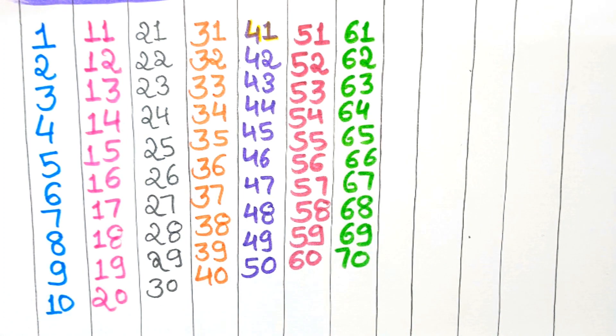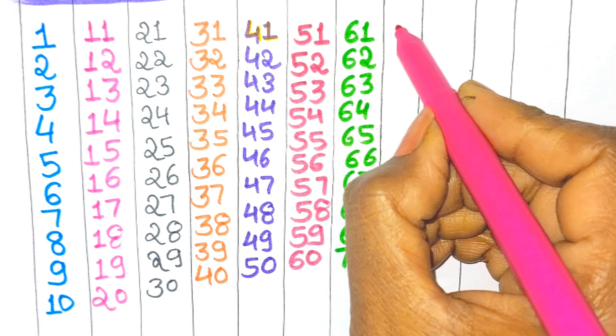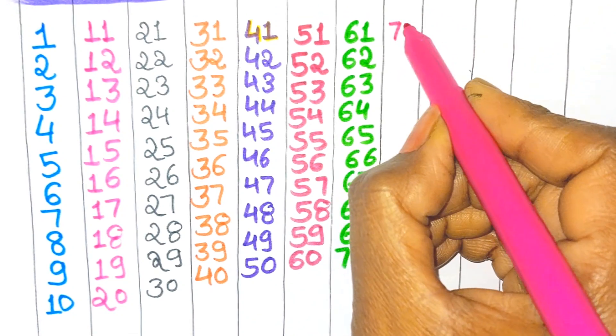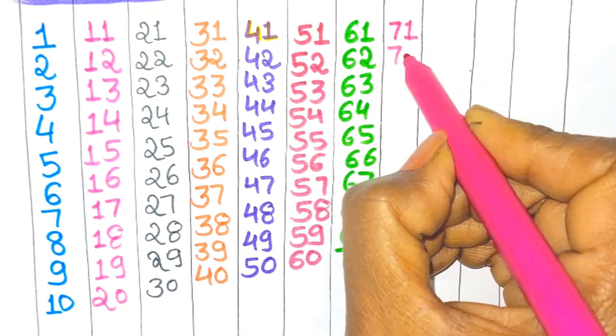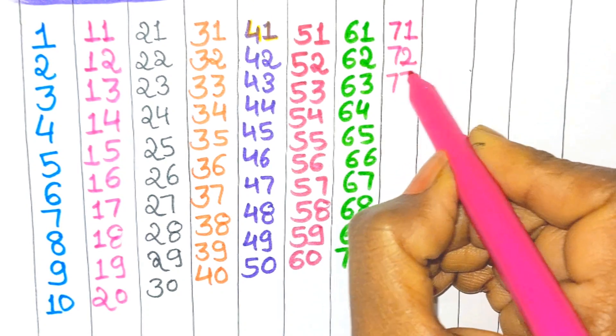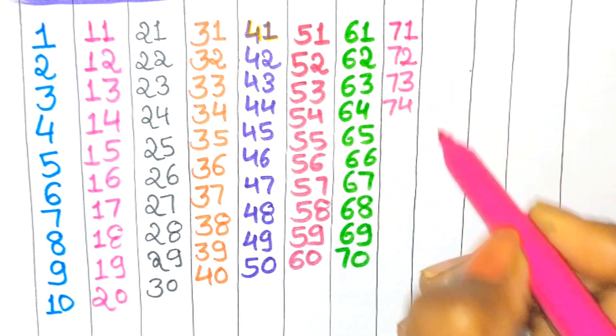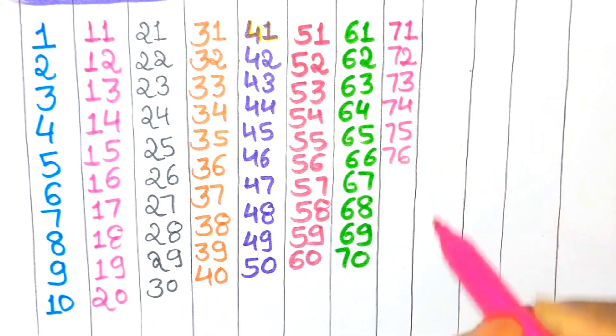Seventy. When we add one with seven, what will be that number? Tell me. Yes, seventy one, seventy two, seventy three, seventy four, seventy five, seventy six.